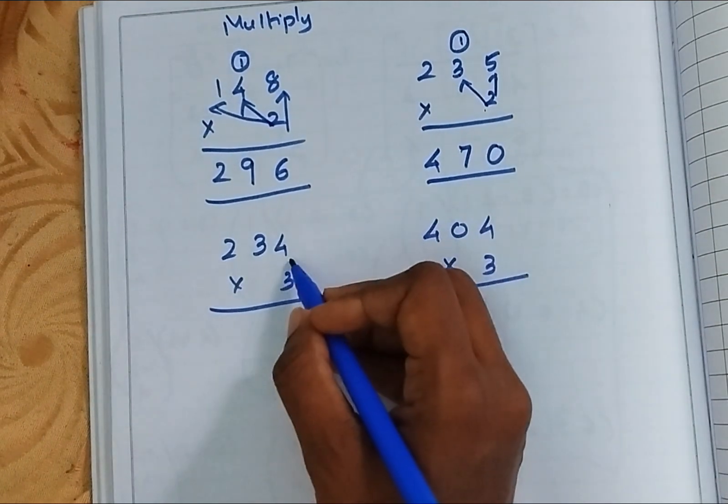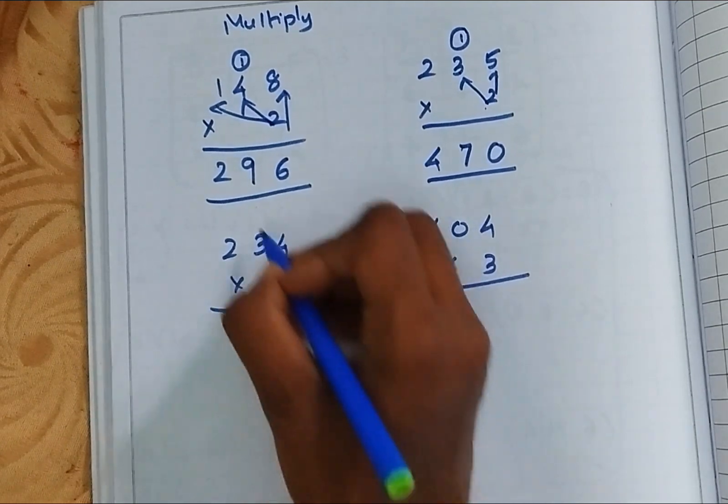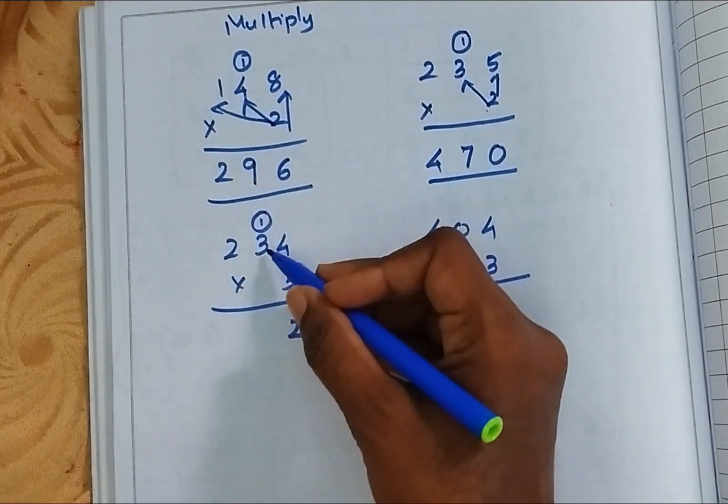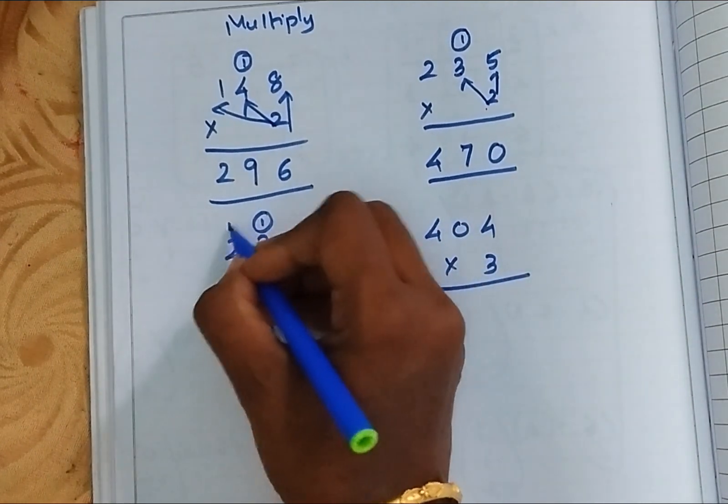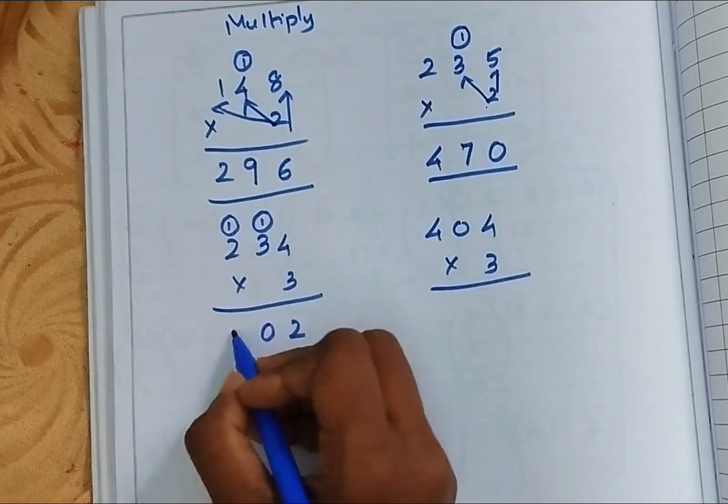Now, 3 times 4 is 12, so 2, carry 1. 3 times 3 is 9, 9 plus 1 is 10. 3 times 2 is 6, 6 plus 1 is 7.